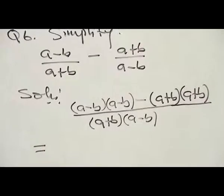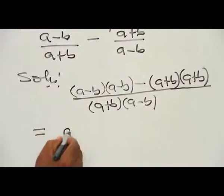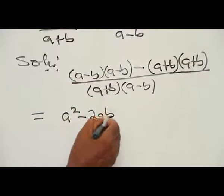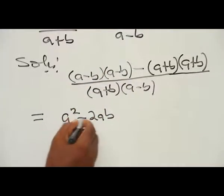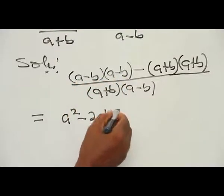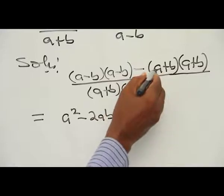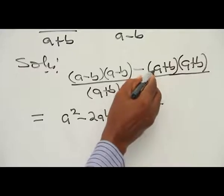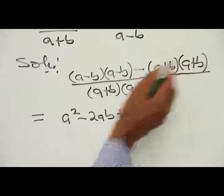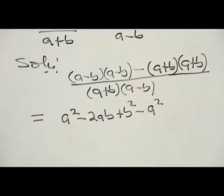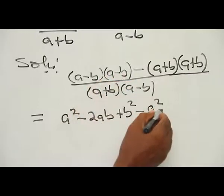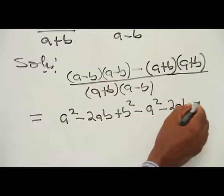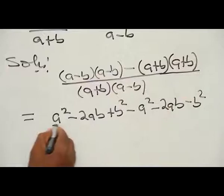Expanding the numerator: (A minus B) squared gives A squared minus 2AB plus B squared. Then (A plus B) squared gives A squared plus 2AB plus B squared. Subtracting, A squared minus A squared cancels, B squared minus B squared cancels, and we are left with minus 2AB minus 2AB in the numerator.